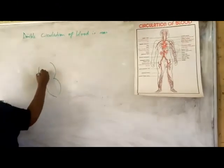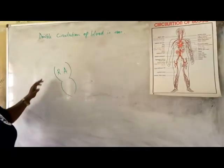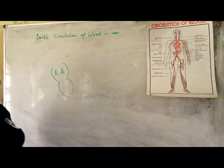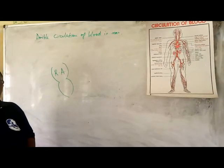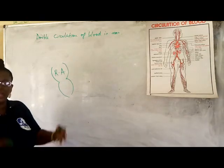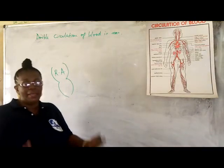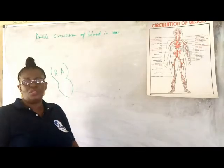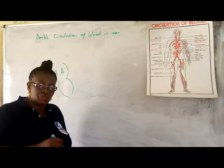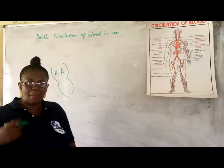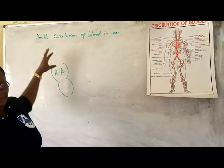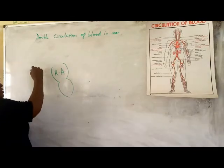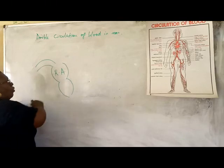Now, this chamber is called the right atrium. Blood coming from every part of the body is deoxygenated — that is, it contains more carbon dioxide than oxygen. That is because the various parts of your body are carrying out one activity or another. Your legs are working, energy is being used, and that energy is from the food and the oxygen in your blood. When the oxygen is used up, carbon dioxide is released. So all the blood coming back to the heart is deoxygenated — it contains more carbon dioxide than oxygen. That blood comes into the heart through what you call the vena cava.